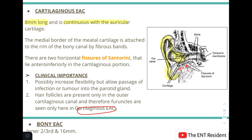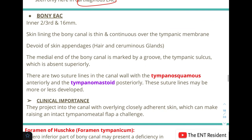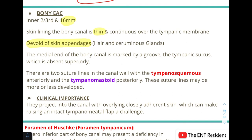The bony EAC is the inner two-thirds, 16 mm long. The skin lining the bony canal is very thin and continuous over the tympanic membrane. It is devoid of skin appendages — no hair or ceruminous glands. The medial end of the bony canal is marked by a groove known as the tympanic sulcus, which is absent superiorly. There are also two suture lines: the tympanosquamous suture anteriorly and the tympanomastoid suture posteriorly.